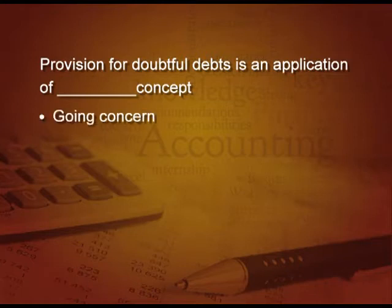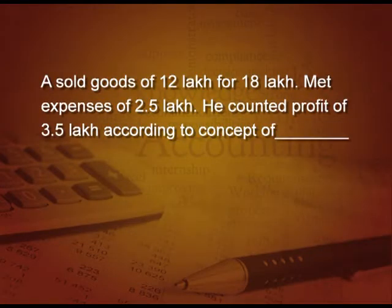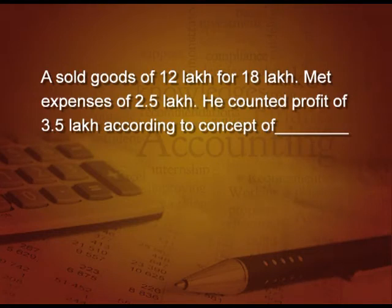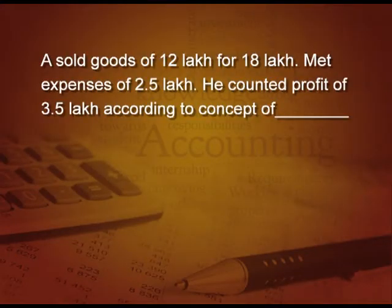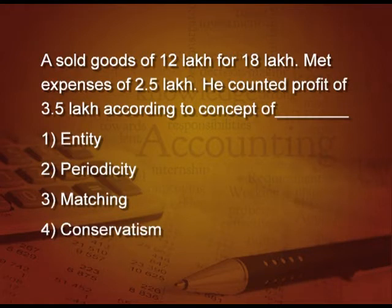Let us do this question: A sold goods of 12 lakhs for 18 lakhs, making a profit of 6 lakhs. He met expenses of 2.5 lakhs from that, counting a net profit of 3.5 lakhs. This is according to which concept — entity, periodicity, matching, or conservatism? It is the matching concept, because we are matching the income of a particular period with the expenses of that period to get a correct profit.